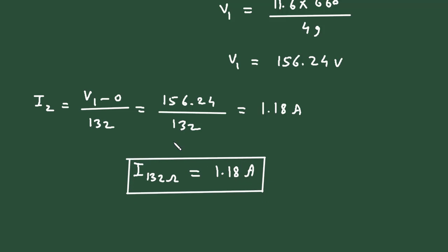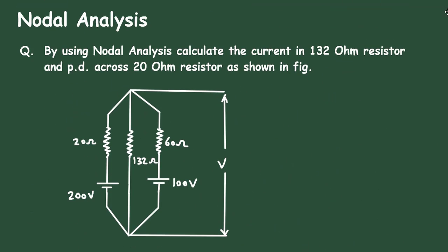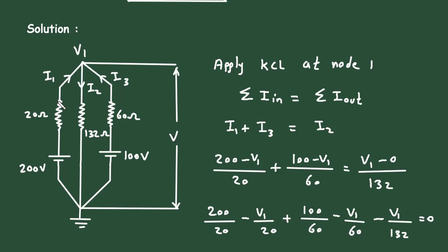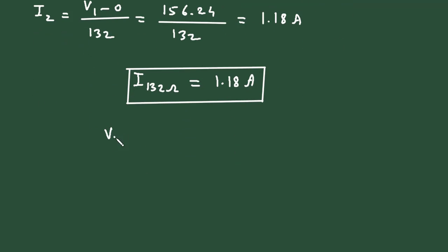Next, we have to find the potential drop across the 20 ohm resistor. To calculate V_20Ω, it is equal to resistance multiplied by current I1, that is 20 × I1.